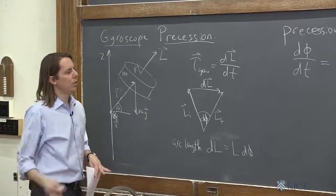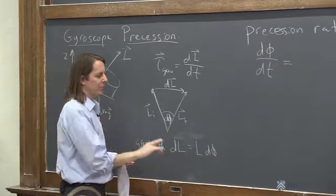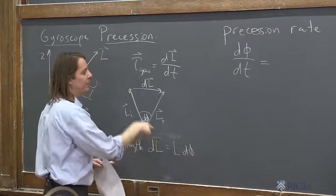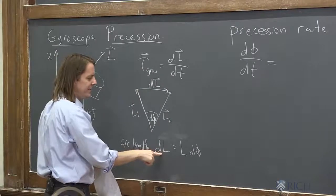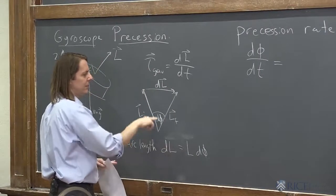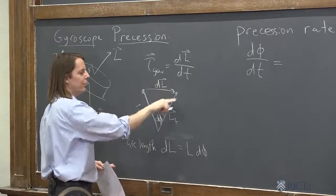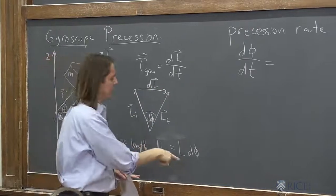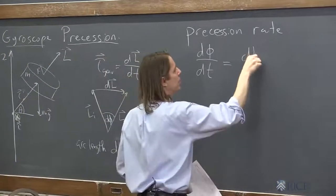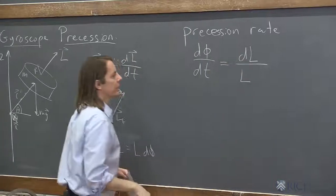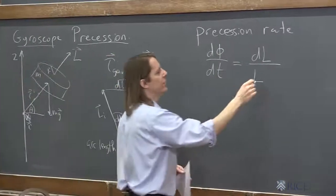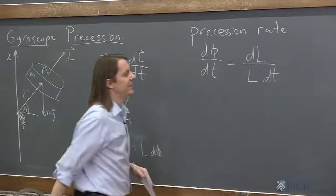And now we want to use our thing that we learned from geometry. What is d phi in terms of these angular momentum? It's dL over big L. So the little arc length that moved over basically the radius of the circle, dL over L. And we'll just keep dt in the bottom. dL over L times dt.